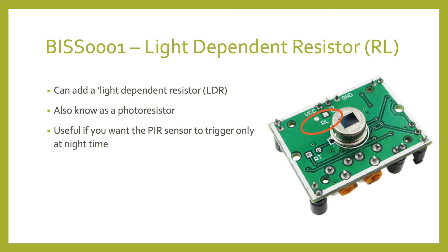There's another adjustable feature cryptically marked with the letters RL, or resistor light. Here you can add an LDR — a light dependent resistor, also known as a photo resistor — to the module. This is used if you don't want the module to trigger in the daytime and only want it to trigger at night. You can also pick up LDRs or purchase pre-compensated and dark-only PIR modules from us through the webshop.